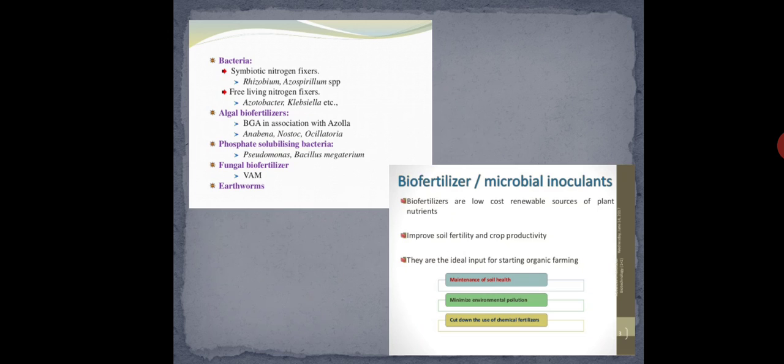Indirectly, these bacteria work as biofertilizers because they fix the atmospheric nitrogen and provide it to the plants, thus promoting plant growth and acting as a fertilizer. That is the symbiotic nitrogen fixer. For free-living nitrogen fixers, examples include Azotobacter and Klebsiella.